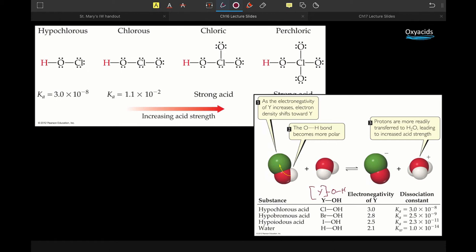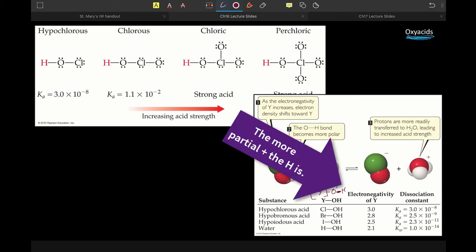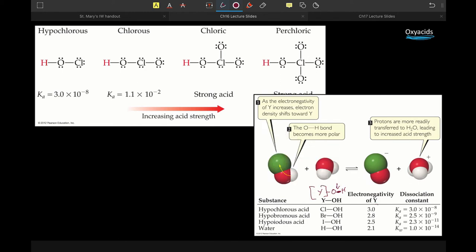We are just looking at the electronegativity of Y. The more that that Y atom is able to pull electron density towards itself, which means pulling it away from this OH bond, the more readily that hydrogen can be taken away by a water molecule. Which is why this one with the highest electronegativity is also the most acidic.